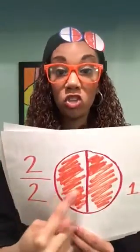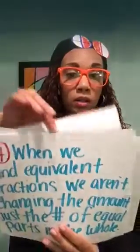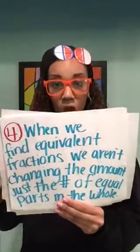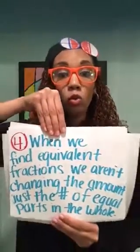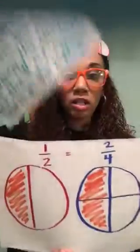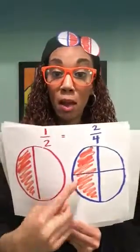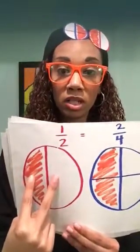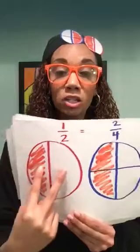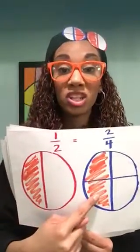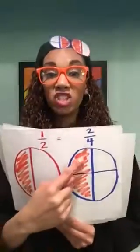A fraction with the same numerator and denominator is the same as one whole. Notice that two halves are shaded — two out of two pieces — that's the same as eating the whole pizza. So when we find equivalent fractions, we're not changing the amount. We're just changing the number of equal parts in the whole. One half and two fourths show the same amount, but there's two equal parts in two halves and four equal parts in two fourths. So one half and two fourths are the same amount — it's just the number of equal parts that's different.